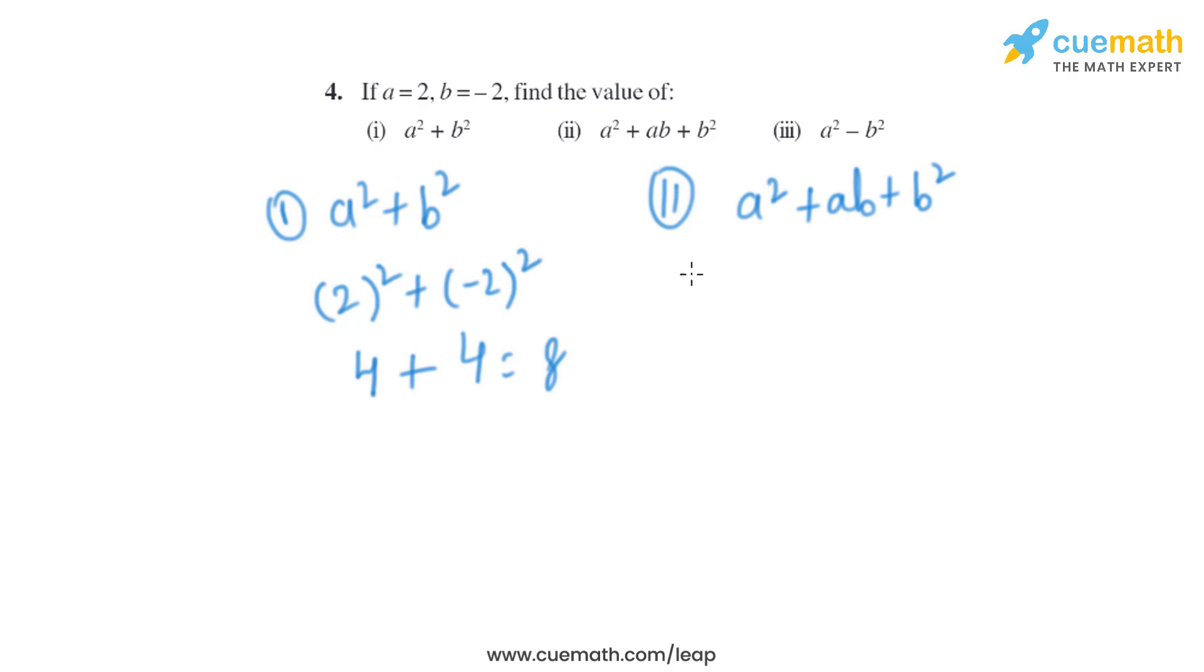Now let's put the value. So as we know that a is 2, so it will become 2 squared plus a is 2 and b is minus 2, we'll put it, and b is minus 2 so it will become minus 2 squared. And as we know that 2 squared is 4, 2 into minus 2 will become minus 4, and minus 2 squared is plus 4, so it will become 4.